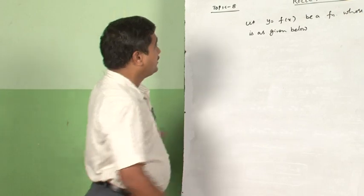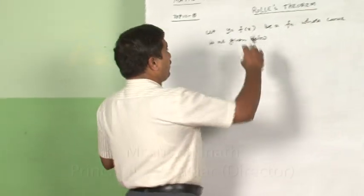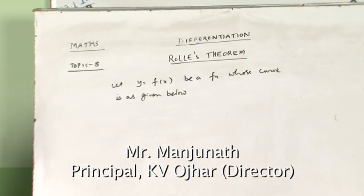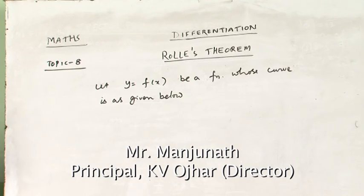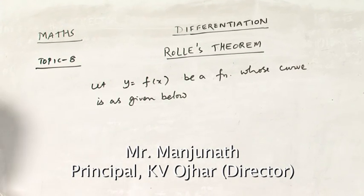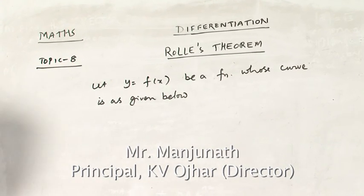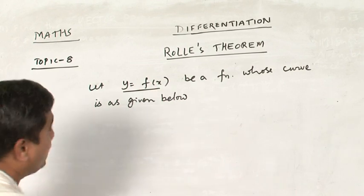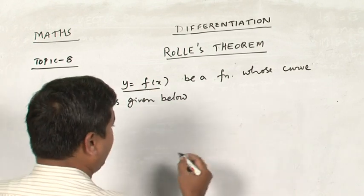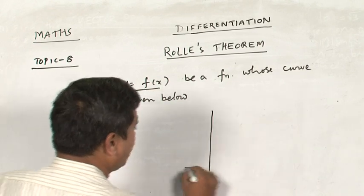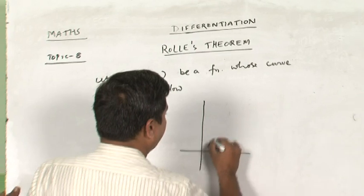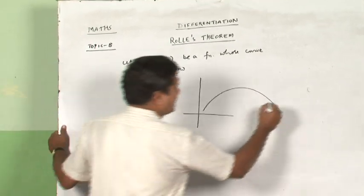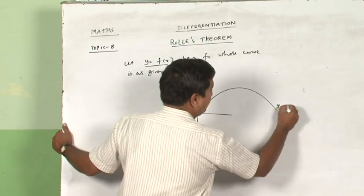Dear students, the topic you are going to study as topic 8 in differentiation is Rolle's theorem. When you take a function y = f(x), you try to draw the curve of this particular function — this is how the curve looks.